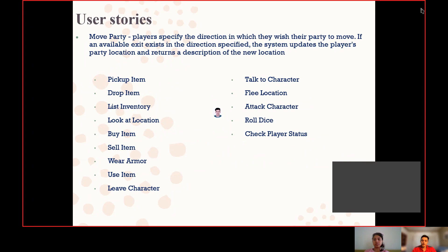There are a few user stories that we have put in our game. One description is for 'move party', which is a command that allows the player to move in a particular direction if there is a valid exit. There are also other commands or user stories such as pick up, drop item, list item inventory, look at the location, and so on.